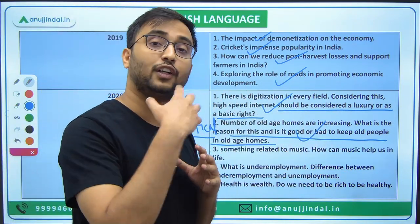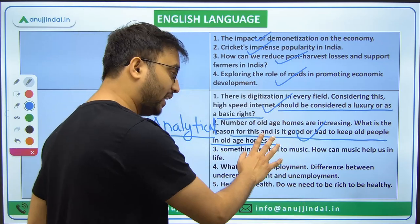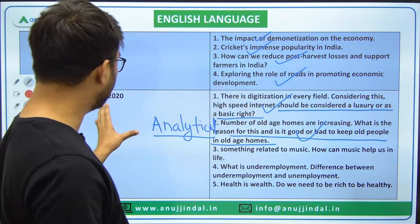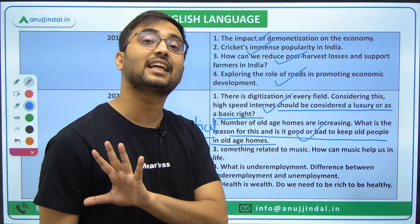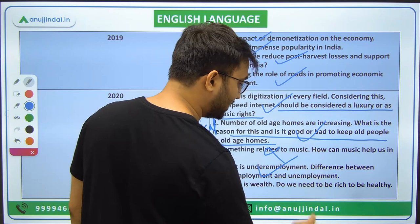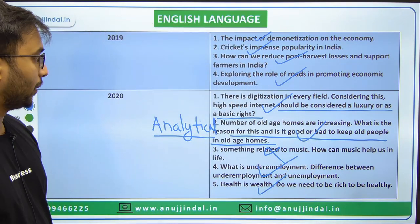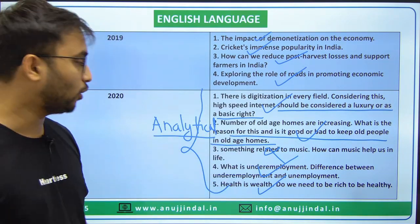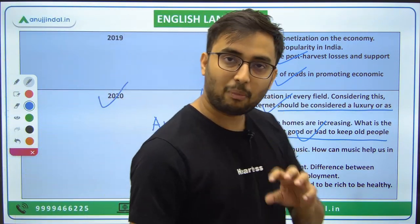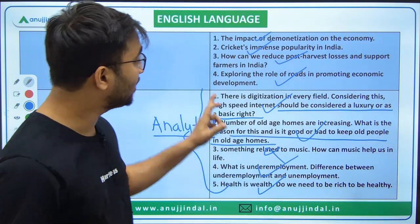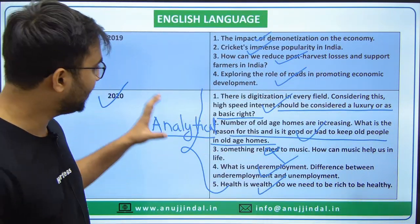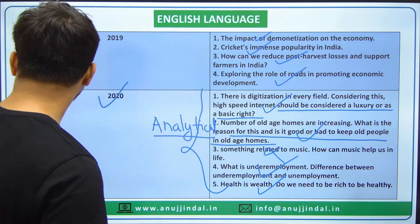Essays from 2020 onwards have become more analytical. You can apply thesis-antithesis — critically analyze and give different arguments, both supporting and opposing the topic. Essay topics since 2020 are no longer direct. Topics related to music, underemployment, and health were also asked. The number of choices given has also increased. From 2020, NABARD seems to be replicating RBI's exam pattern in essay writing — essays are becoming more analytical and even philosophical, increasing difficulty.